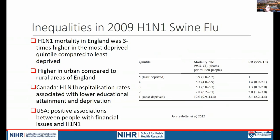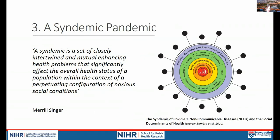Thankfully, COVID mortality rates are much lower than Spanish flu, but we can also draw on more recent pandemic experience. Data from the 2009 H1N1 swine flu epidemic, from Harry Rutter and colleagues, shows H1N1 mortality was around three times higher in the most deprived quintiles of neighborhoods compared to the least deprived — again, higher in urban compared to rural areas. International data from Canada and the USA reinforces this, showing associations between hospitalization rates and educational attainment and deprivation in relation to H1N1.